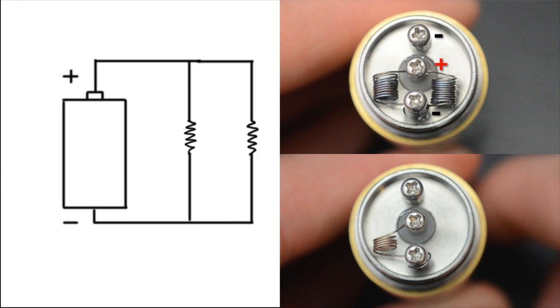Coils are considered to be in parallel because of how they're wired, not just because they look parallel. Each coil has to have one end connected to the positive post with the other end connected to ground.